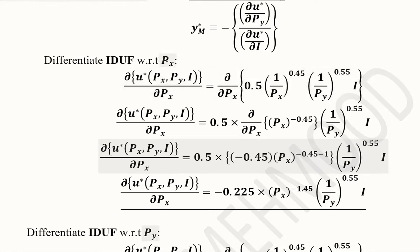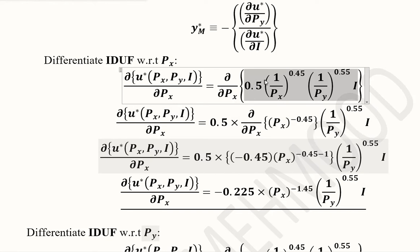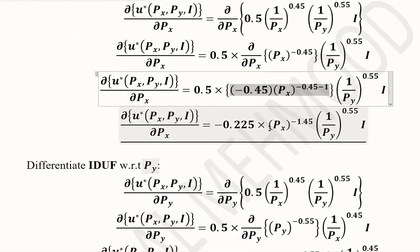This is the partial differentiation of the indirect utility function with respect to Px. Here, I and Py are treated as constants, so the coefficient comes out and only the term containing Px is differentiated. This is an application of the power rule. After applying the power rule, we get the resulting derivative, which we now note for later use.